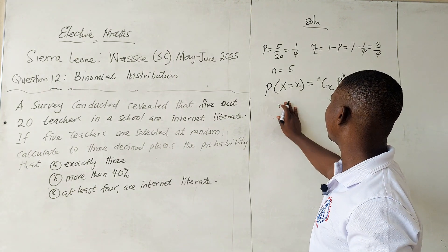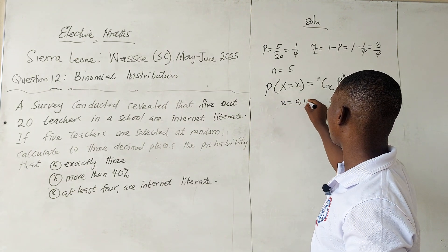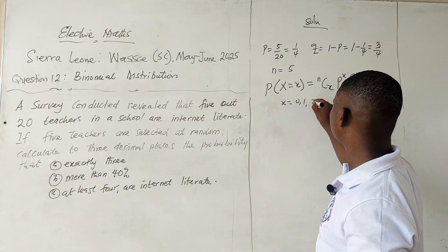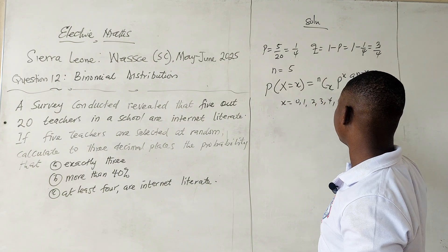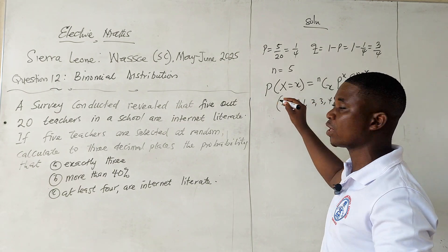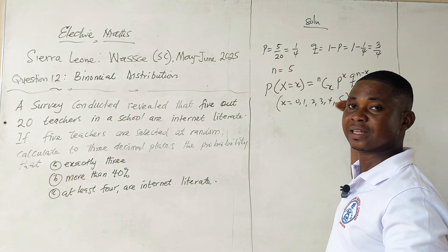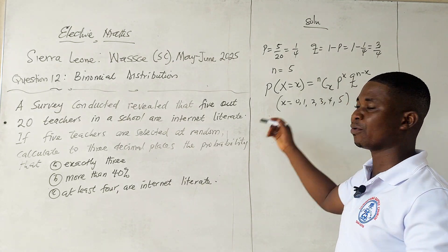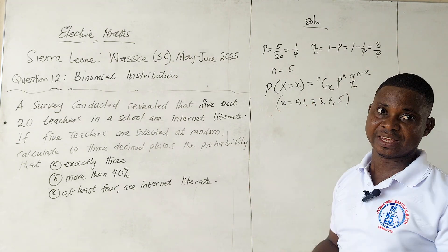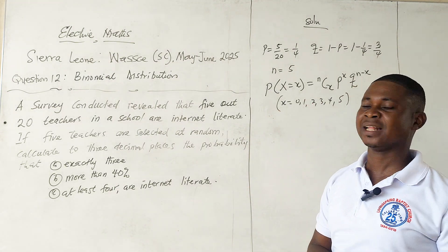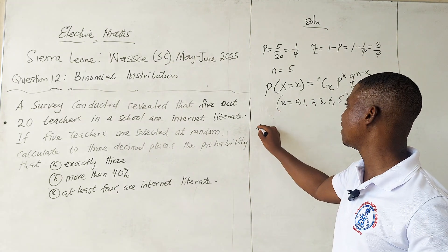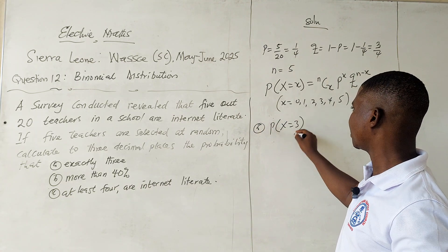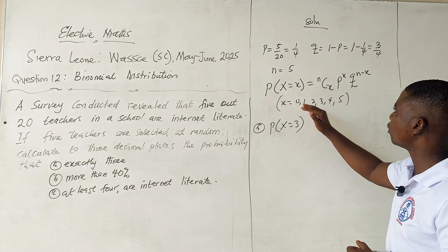Here x can equal 0, 1, 2, 3, 4, or 5, because we are talking about the number of teachers selected, which can be zero up to five. For part (a), exactly three are selected, so x = 3.